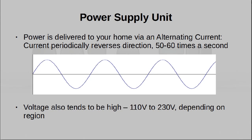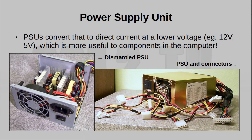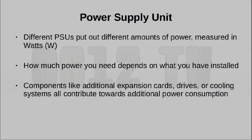Nothing in a computer will work if it doesn't get power, and that is the responsibility of the power supply unit, also known as the PSU. Electricity comes to your home in the form of an alternating current at a high voltage. This sort of high-voltage alternating current isn't very useful to a computer, which is why a PSU converts it to a direct current and reduces its voltage to something low, like 12 volts or 5 volts. Normally a PSU will supply different amounts of voltage on different outputs for different purposes. Different types of PSUs are available — some are capable of putting out more power, which is necessary if you're using your computer for more intensive uses. For example, serious gaming means that graphics card is going to draw a lot of power, so you should get a PSU capable of supplying it.